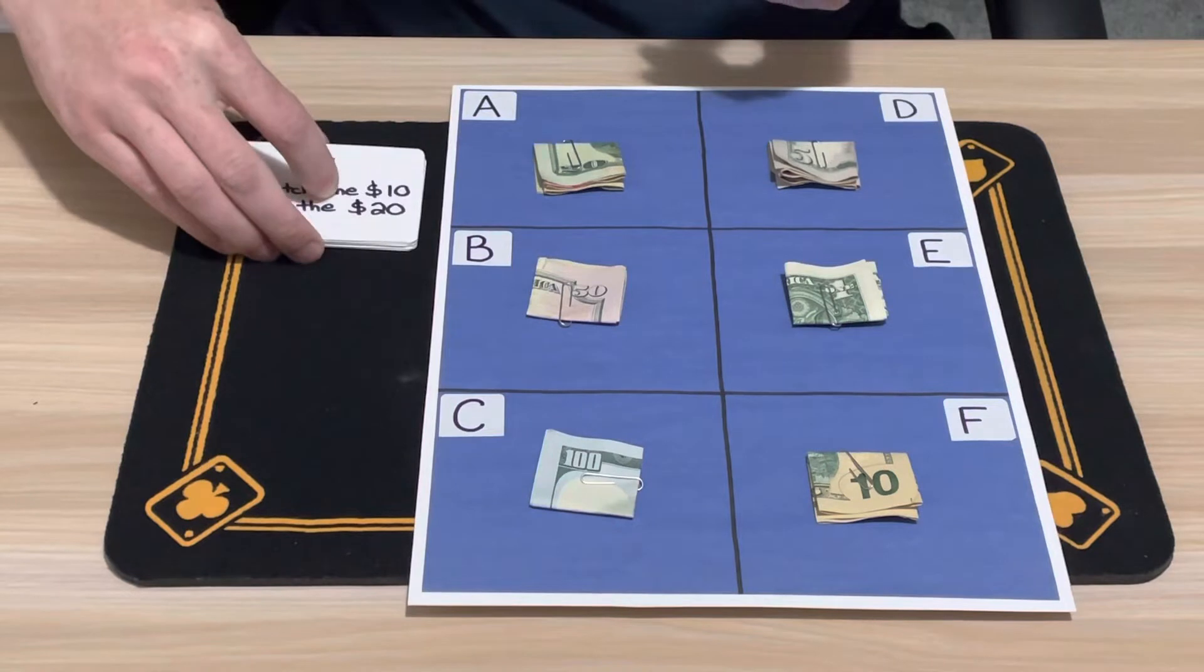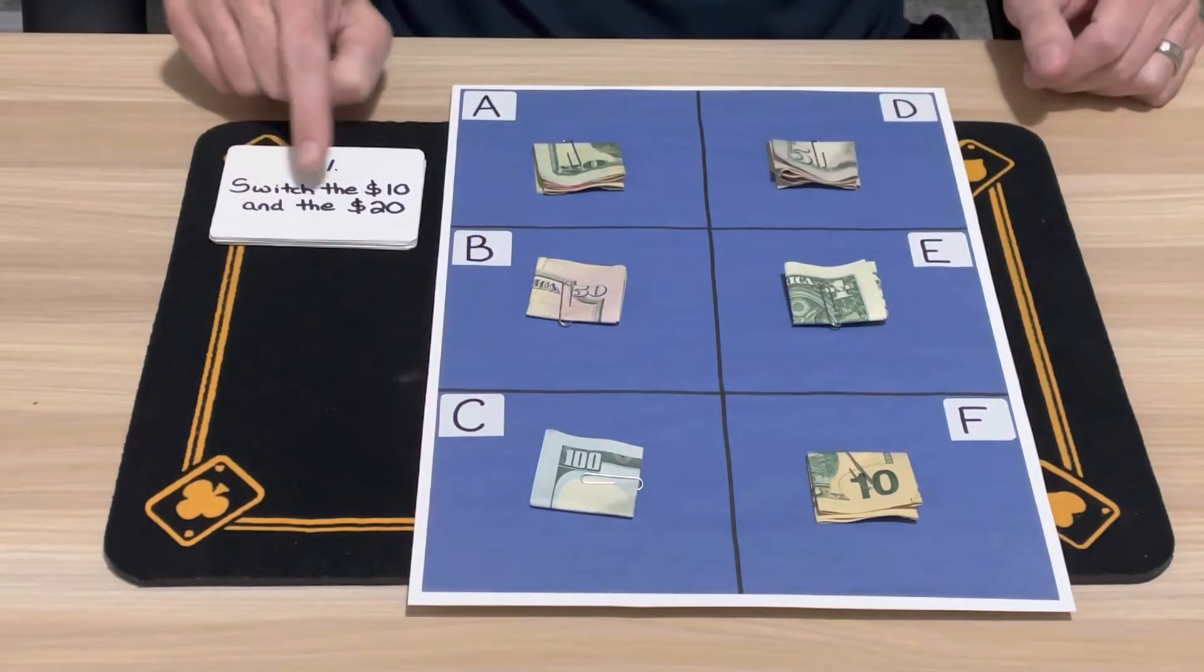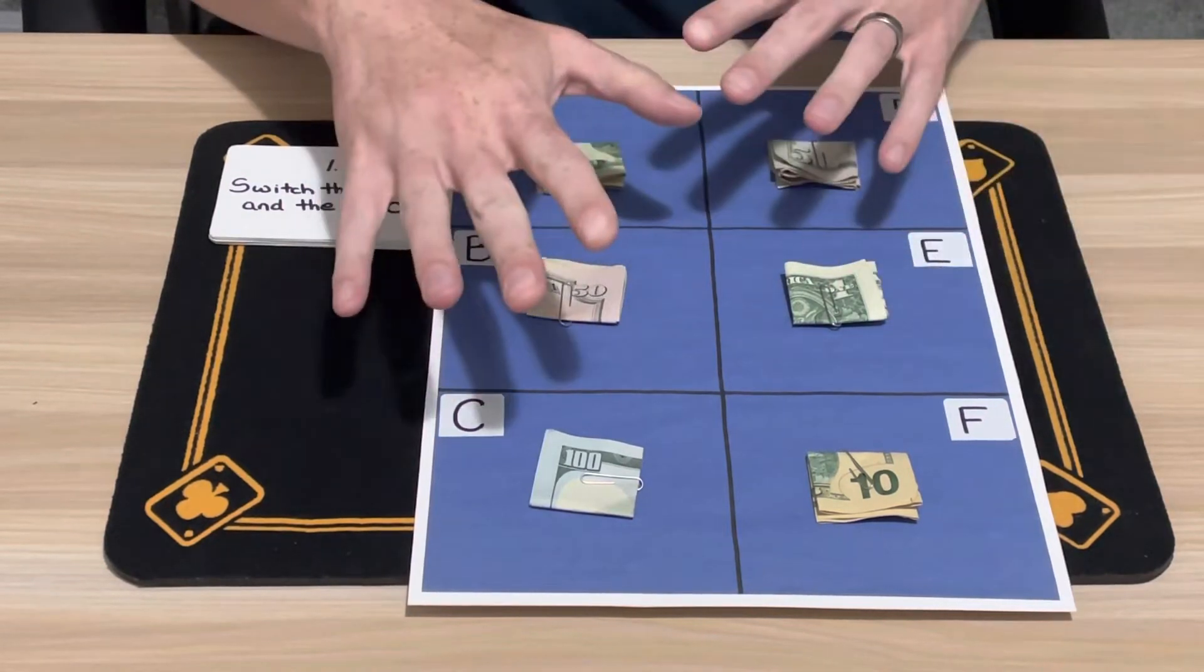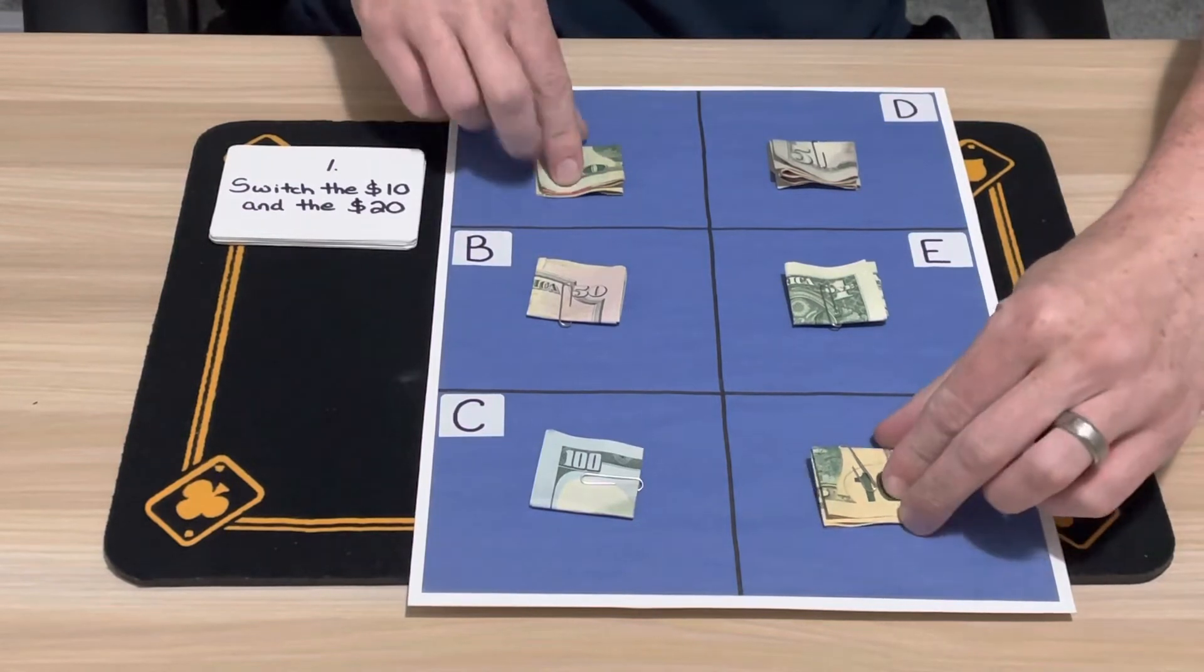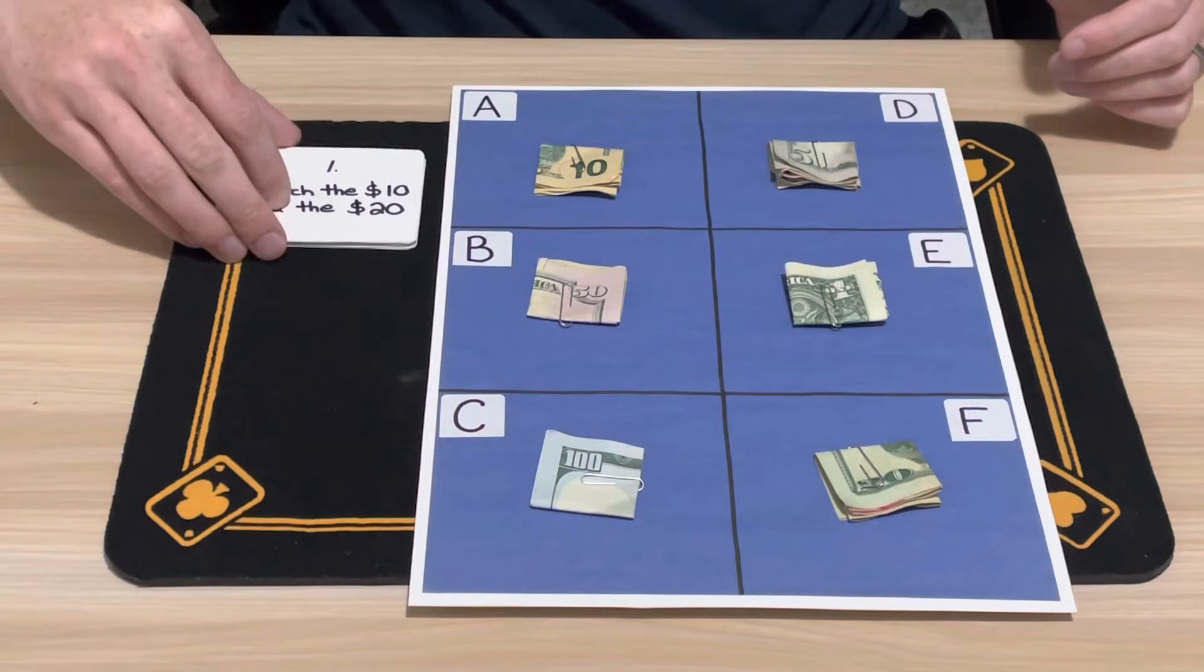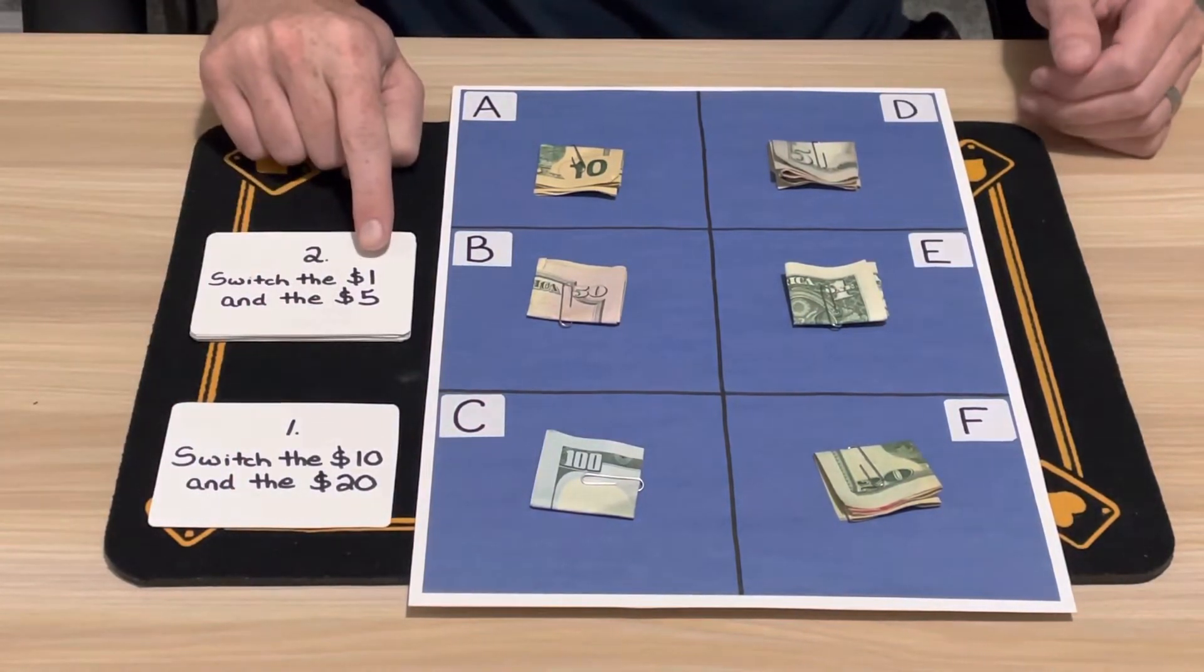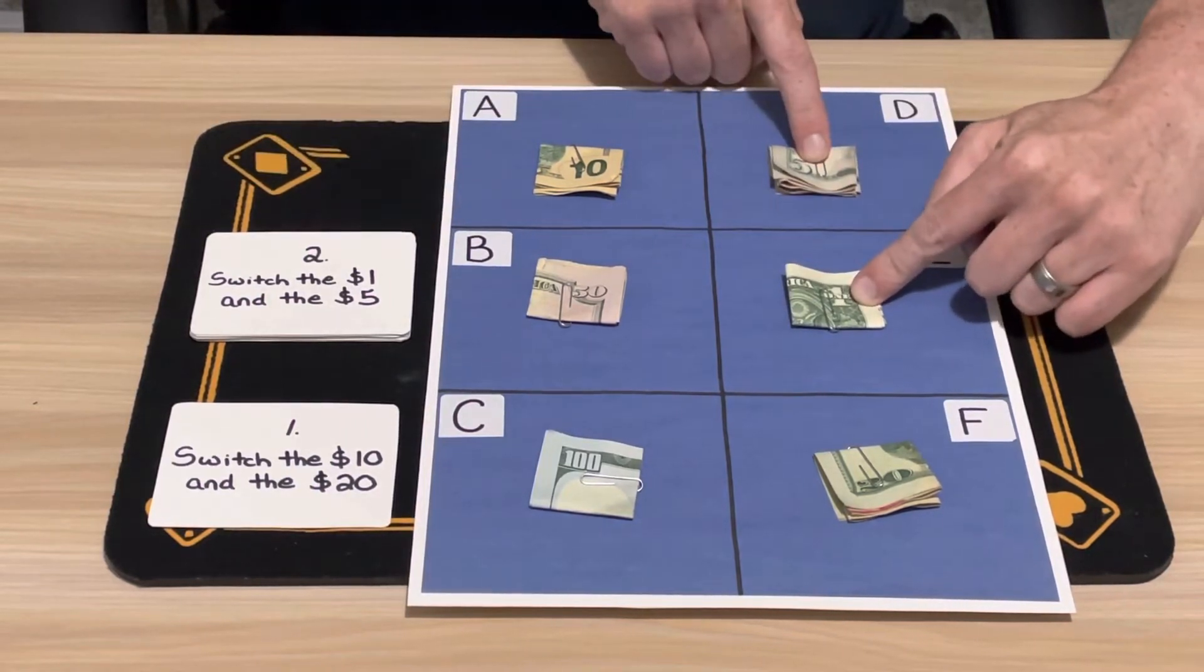So step one: switch the $10 bill and the $20 bill. Again, these bills could start on any space, but switch the 10 and the 20, so we'll just switch positions like that. Step two: switch the $1 bill right here and the $5 bill, so just switch them.